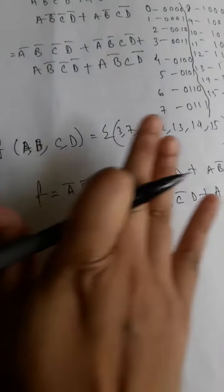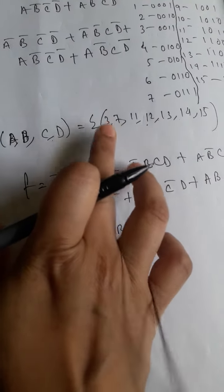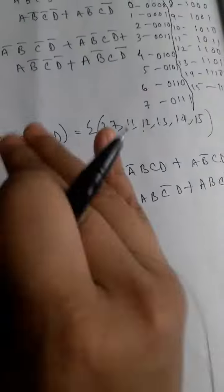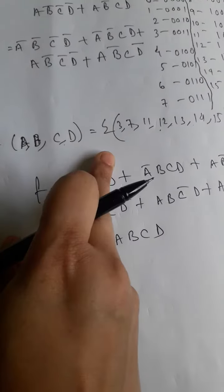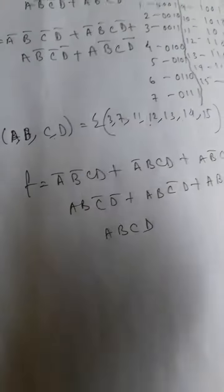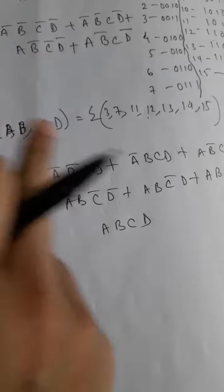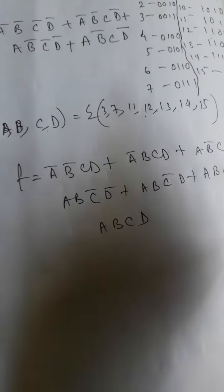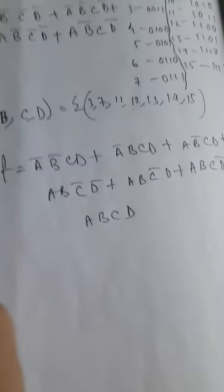Just go through the binary of each number and represent those numbers using these variables. Keep one thing in mind: whenever you get 0, put a bar over that particular variable. Variables with 1 will have no bar.